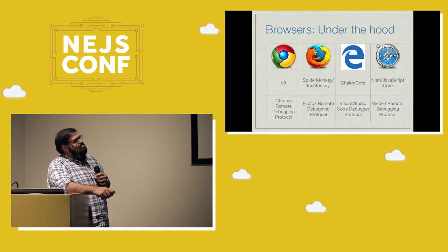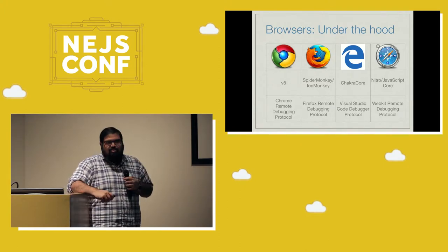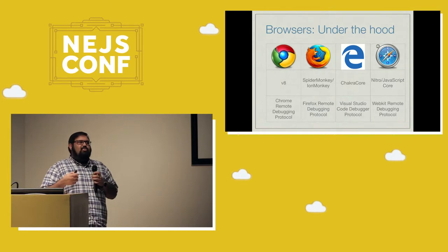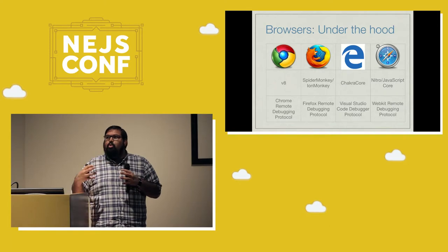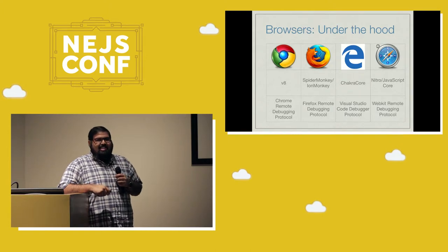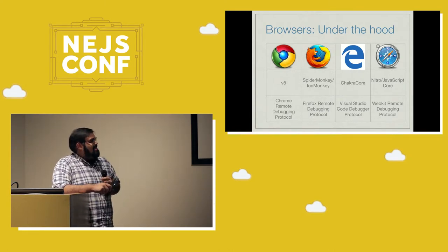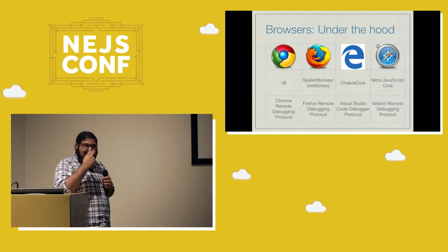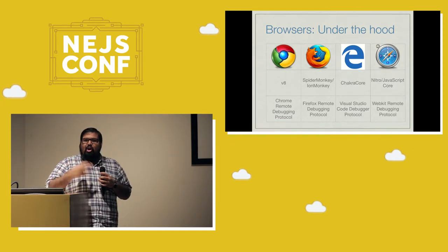Then there is Safari, with Nitro/JavaScriptCore and their own protocol. In the end, there are four different debugging protocols, and this is where all of the feature development and the DevTools wars are happening. When Chrome DevTools adds something, Firefox will add something that matches its API or provides the same feature about a month later. Then Visual Studio will come out with something, and then Chrome will say they need to do that. It is a really vivid time to be adding features to all of these tools.